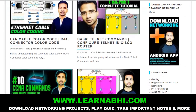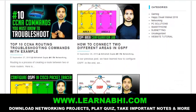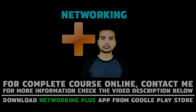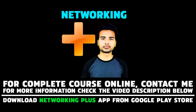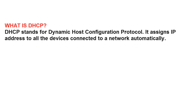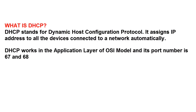Visit our website www.learnavi.com or download our Android application Networking Plus to practice networking quiz, interview questions and many more. Check the link in the description section below. First of all, let's understand what is DHCP. DHCP stands for Dynamic Host Control Protocol. It assigns IP address to all the devices connected to a network automatically. DHCP works in the application layer of OSI model and its port number is 67 and 68.